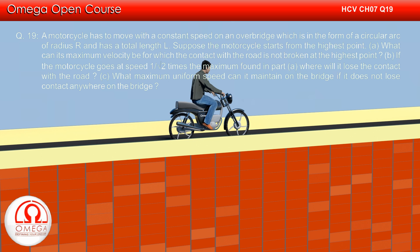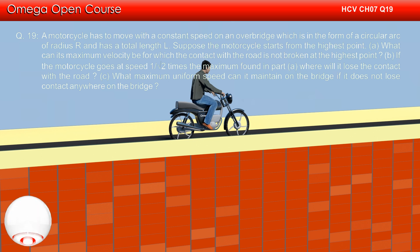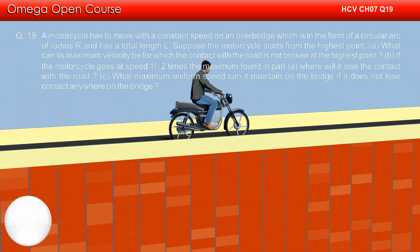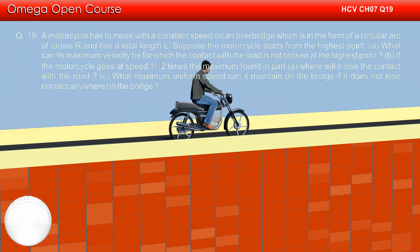Part B: If the motorcycle goes at a speed of 1 over root 2 times the maximum found in part A, where will it lose contact with the road? Part C: What maximum uniform speed can it maintain on the bridge if it does not lose contact anywhere on the bridge?